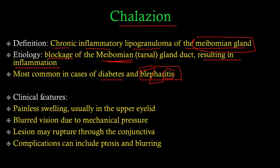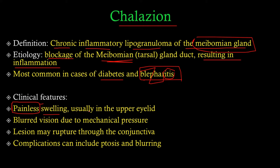The clinical features of a chalazion include: painless swelling. The word painless is very important here because similar diseases will be painful, so this differentiates chalazion significantly. There is swelling due to inflammation and it is usually seen in the upper eyelid — you will not usually see chalazions in the lower eyelid.